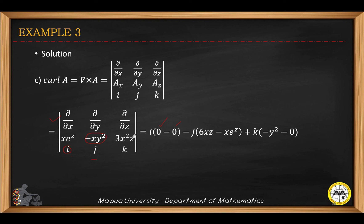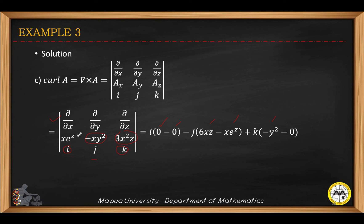The partial derivative of 3x²z with respect to x — derivative of x squared is 2x, so you get 6xz. Then the derivative with respect to z of x·e^z — x is constant so you get x·e^z, and you have a negative sign here. For the k component: derivative of x with respect to x is 1, and then you have negative y squared. Then the negative of the product — taking the derivative with respect to y, but this is a pure constant with no y, so the derivative is zero. Simplifying, you get the curl of the operator and a.